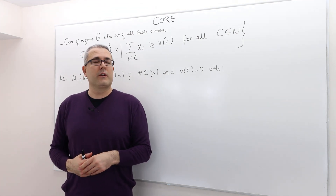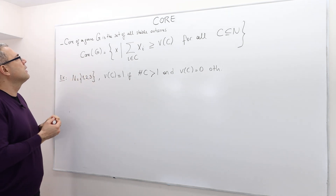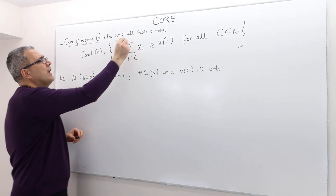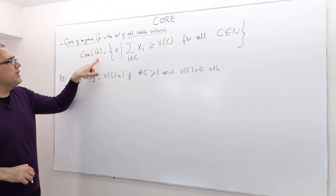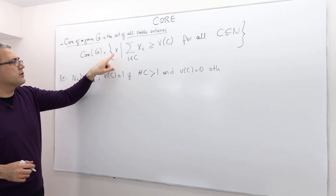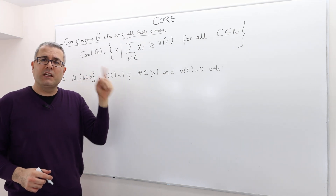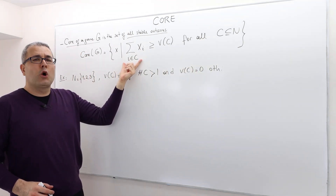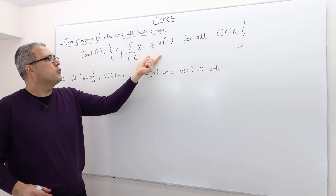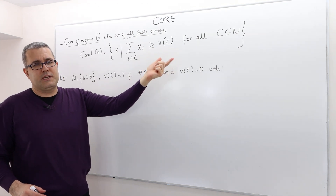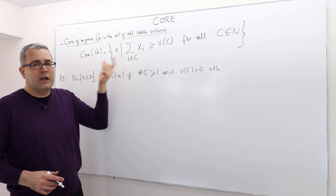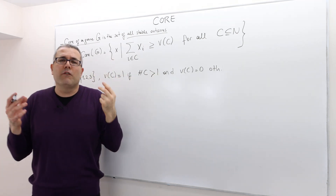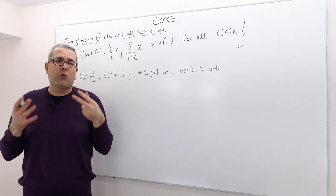In this episode we're going to talk about core. The core of a coalitional game G is basically the set of all stable outcomes. The core can be mathematically defined as the set of all payoff vectors — which satisfy individual rationality and feasibility — such that for every coalition C, the total payoff of coalition C is no less than the worth of coalition C. All stable payoff vectors form the set called the core of a game.